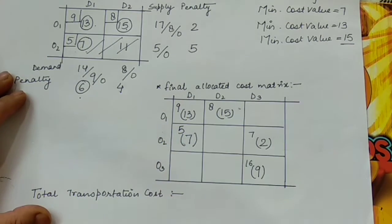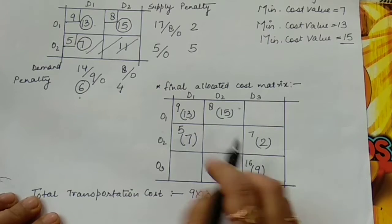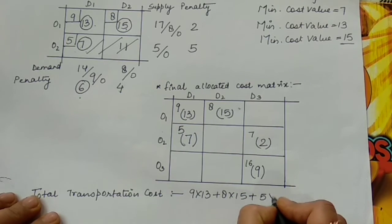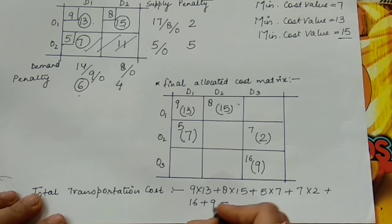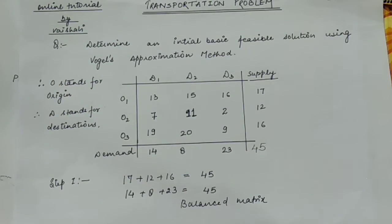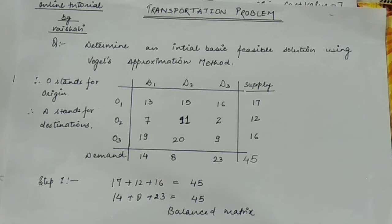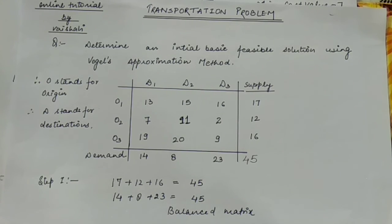The total transportation cost is the sum of individual cost multiplied by individual allocated value: 9×13 + 8×15 + 5×7 + 7×2 + 16×9 = Rs. 430. So the initial basic feasible solution obtained using the Vogel approximation method is Rs. 430. Please like and subscribe to my channel, thank you.